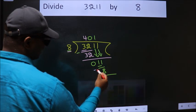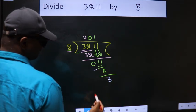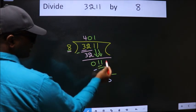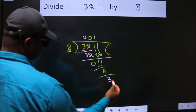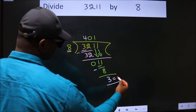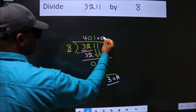Now we subtract. We get 3. No more numbers to bring it down. So we stop here. This is our remainder. This is our quotient.